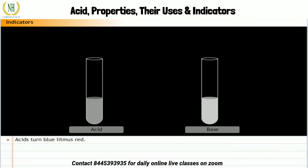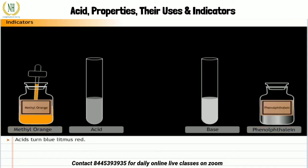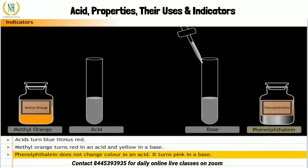Apart from natural indicators, there are a few synthetic indicators such as methyl orange and phenolphthalein. The neutral color of methyl orange is orange, and it turns red in an acid and yellow in a base. Phenolphthalein is colorless. It does not change in an acid but turns pink in a base.